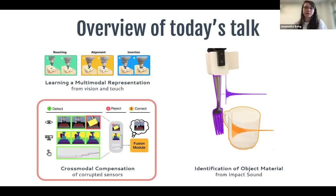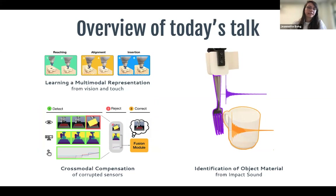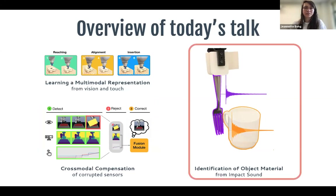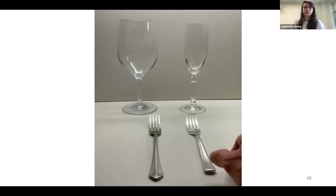More recently, I became interested in another sensor modality — sound — which people use very effectively for inference about object material from impact sounds. To illustrate your own mental intuition, consider inferring materials from vision only. I can tell you these objects are made of different materials, but from vision alone you might make mistakes — one glass is actually plastic, and one seemingly steel fork is also plastic.